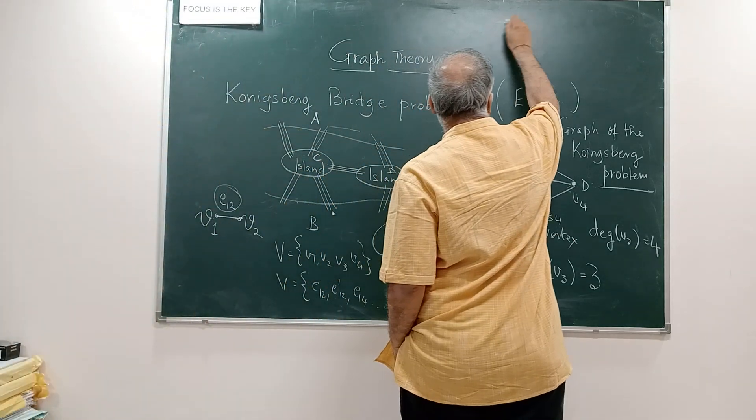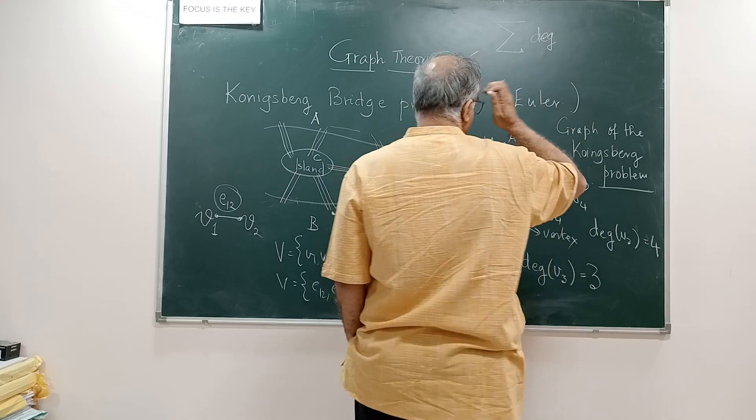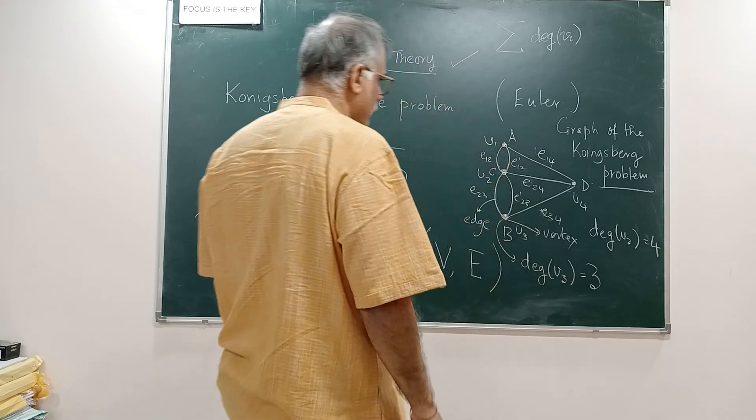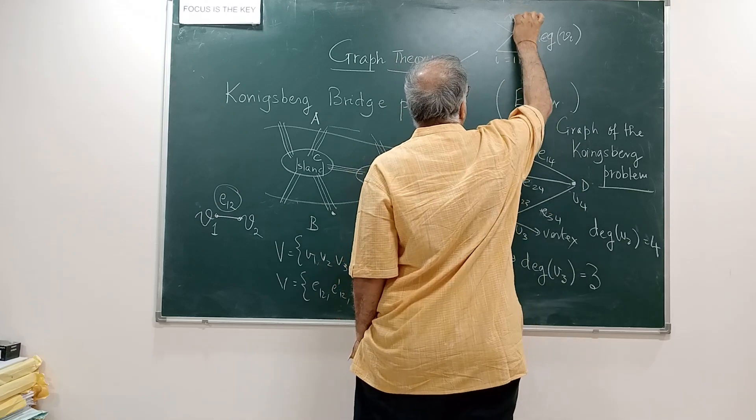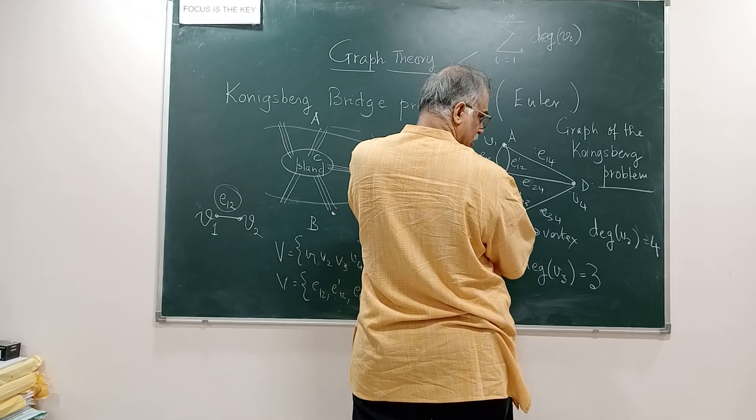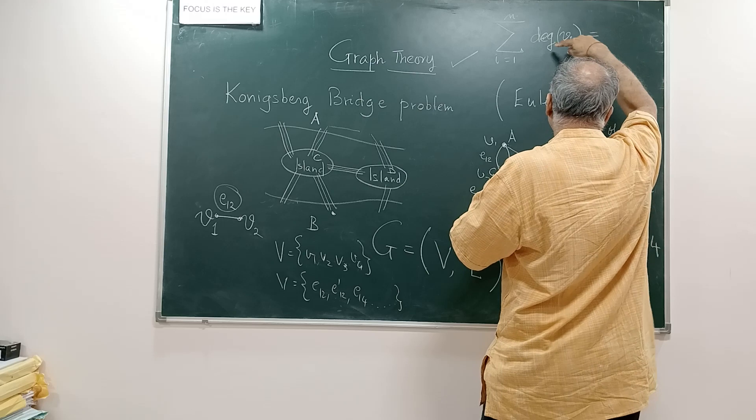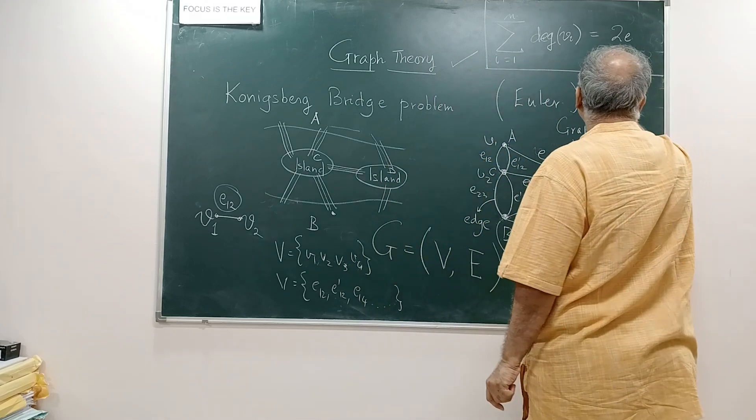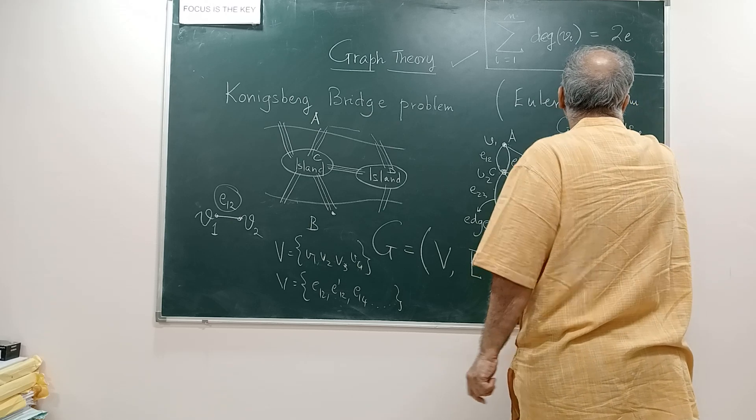So if I sum up the degrees of all the vertices, each edge is contributing to the degree of 2 vertices. So the total sum of the degrees of each vertex is nothing but twice the number of edges and this is called the basic theorem of graph theory or the first theorem of graph theory.